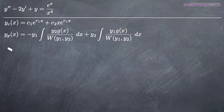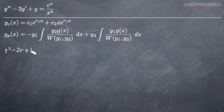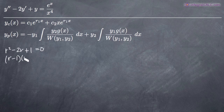To find the complementary solution, we just turn the y's on the left hand side into r. Because it's the second derivative of y, we have r squared minus 2r plus 1. We set that equal to zero, ignoring the right hand side, and our goal is to solve for r — so we need to factor.